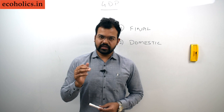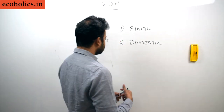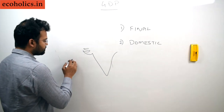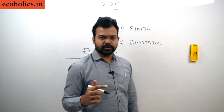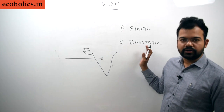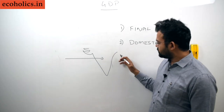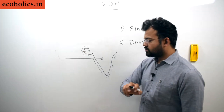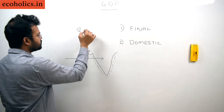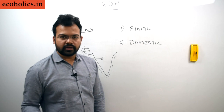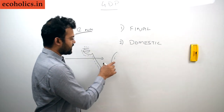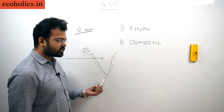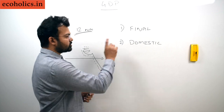The second keyword is 'domestic territory.' Whatever goods and services are produced in the domestic territory are counted. This includes up to 12 nautical miles from the border of the country, which is also considered part of India's territory. Whatever is produced at that point will also come under the calculation of GDP.